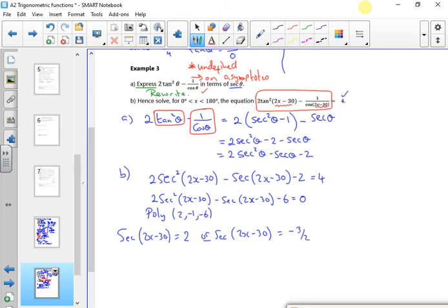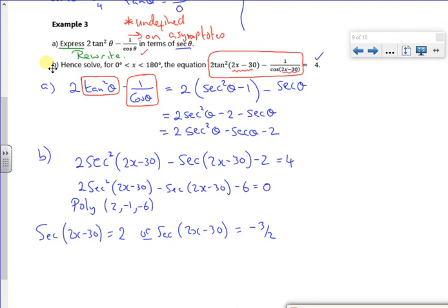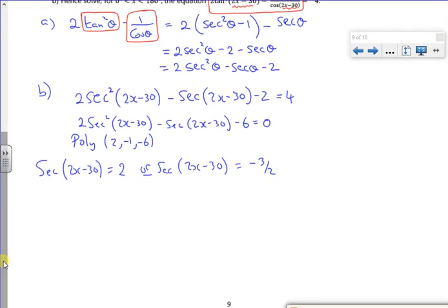Now I know that secant is 1/cos. Let's put it back on full screen now. So I can switch it. So I can see it as 1/cos. So if I flip it, I've got cos. I've gone back to be capitals. cos(2x - 30) = 1/2. And I've got cos(2x - 30) = -2/3.